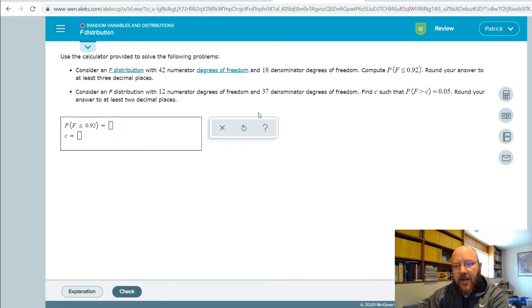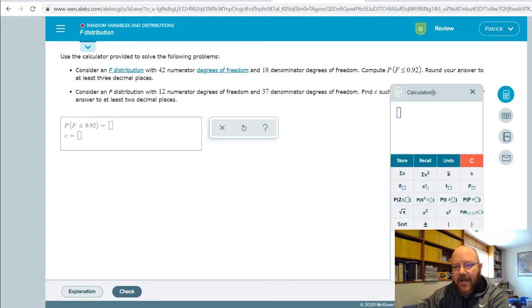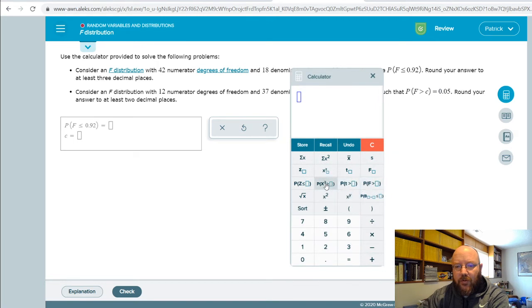In this one you're going to calculate the probability, and this one you're going to actually calculate a critical value. And just like before where we used P, Z and P and T, now we're going to use this guy over here, which is P.